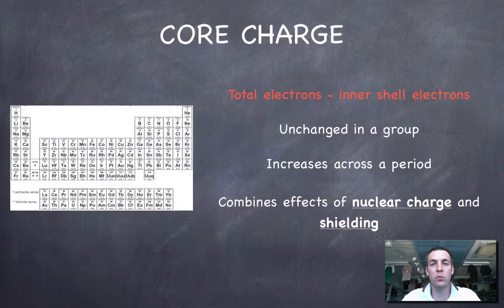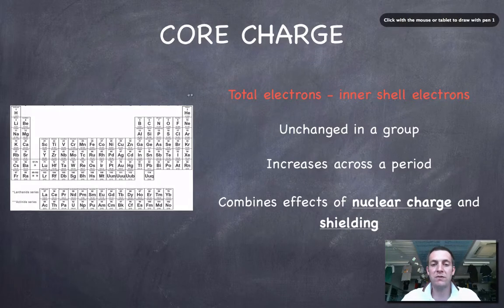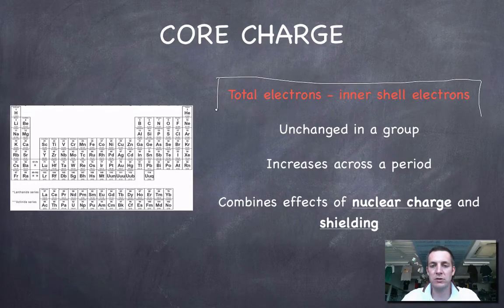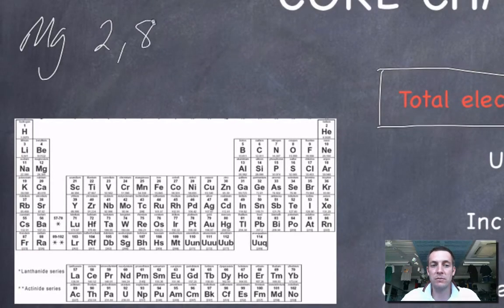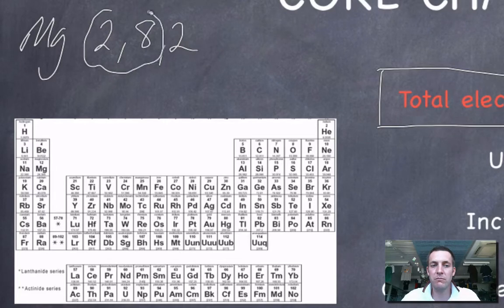If we're going to try and explain why these things vary the way they do, we're going to need to talk about something called core charge. How do we find core charge? It's a very simple sum: it's the total number of electrons minus the number of inner shell electrons. For magnesium, which has two electrons in its first shell, eight in its second, and two in its third — 12 electrons in total — 10 are in inner shells, so that leaves two as its core charge.